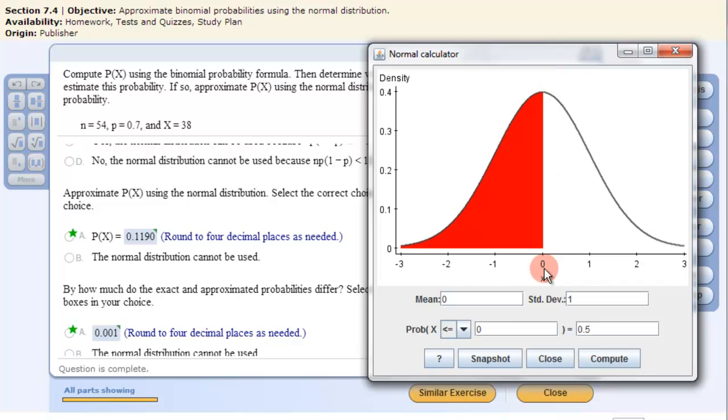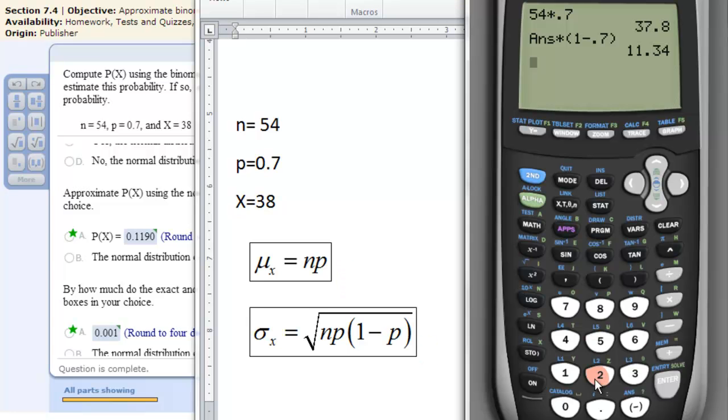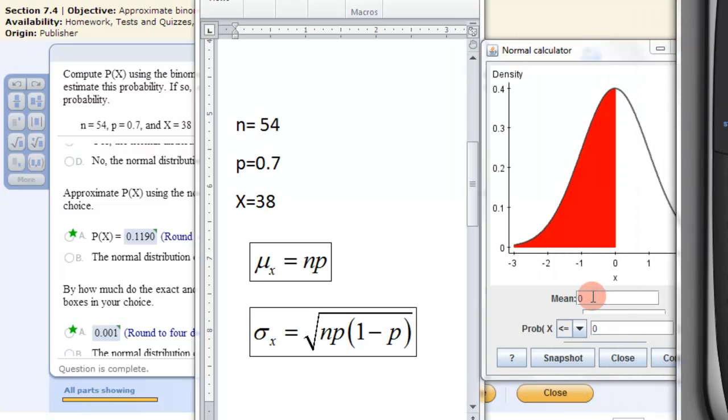And then we need some information. We need the mean, the standard deviation, and then we have our probability stuff down here. But we don't have a mean or standard deviation. So remember the mean and standard deviation of a binomial probability are these two equations right here. This is the information I have for this problem. Let's get the mean, so it's N times P, which was N times P right up here, so 37.8 is my mean.